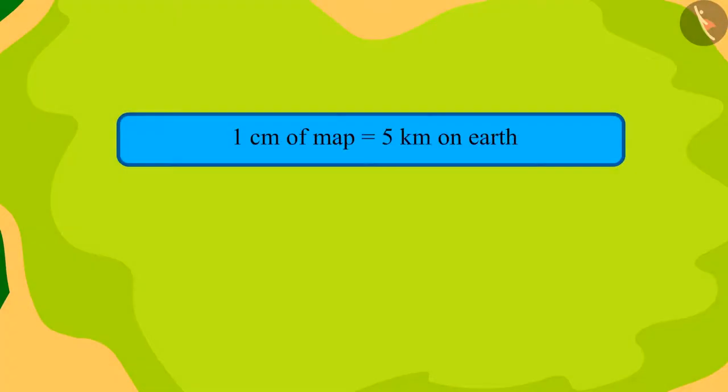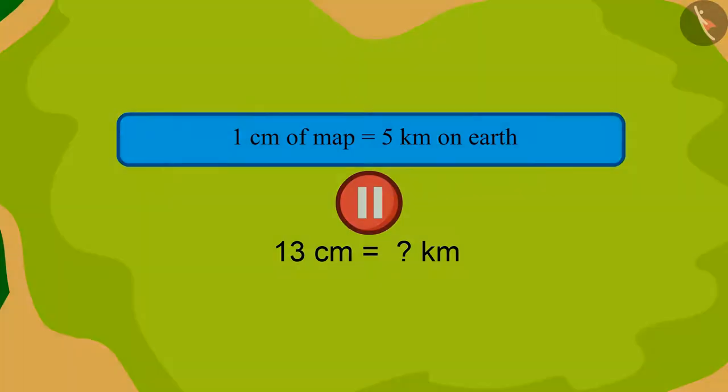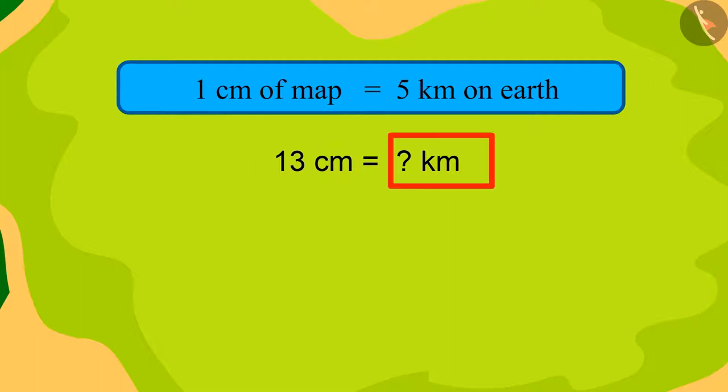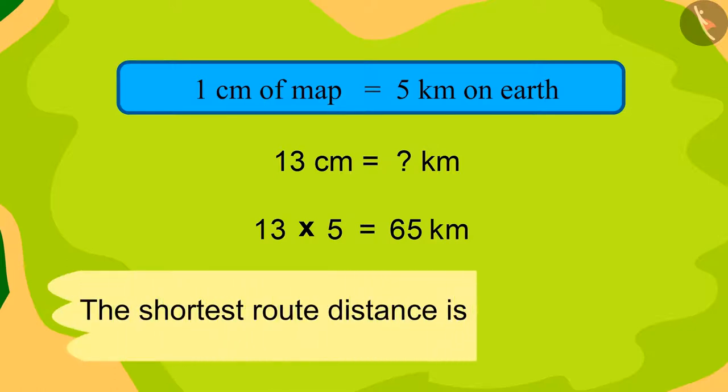Can you really tell the distance by looking at the scale written on this map? You can think by pausing the video if you want. 1 centimeter of map is equal to 5 kilometers on the earth. Therefore, how many kilometers will 13 centimeters be? 13 times 5, that is 65 kilometers. The length of the shortest route actually is 65 kilometers.